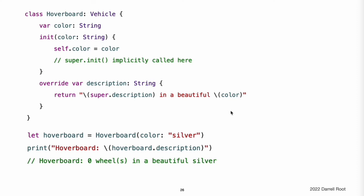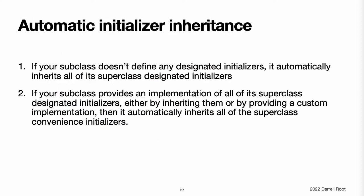An instance of Hoverboard uses the default numberOfWheels supplied by the Vehicle initializer. Note: subclasses can modify inherited variable properties during initialization, but cannot modify inherited constant properties.